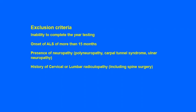Exclusion criteria include the inability to complete the full year of testing, as missing data points would significantly compromise the study. We would like ALS patients to have an onset of 15 months or less. We also need to ensure they do not have a polyneuropathy such as from diabetes, carpal tunnel syndrome, ulnar neuropathies, or a history of cervical or lumbar radiculopathy or spine surgery. Most patients will have had an EMG, and if it was done at our program we can immediately determine whether these conditions are present.